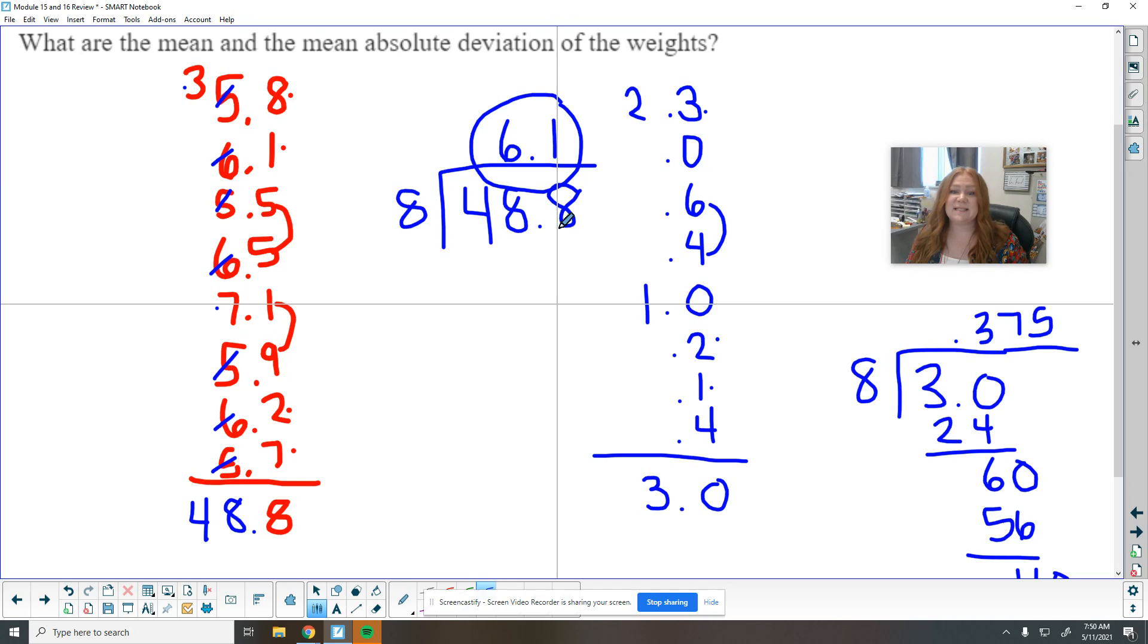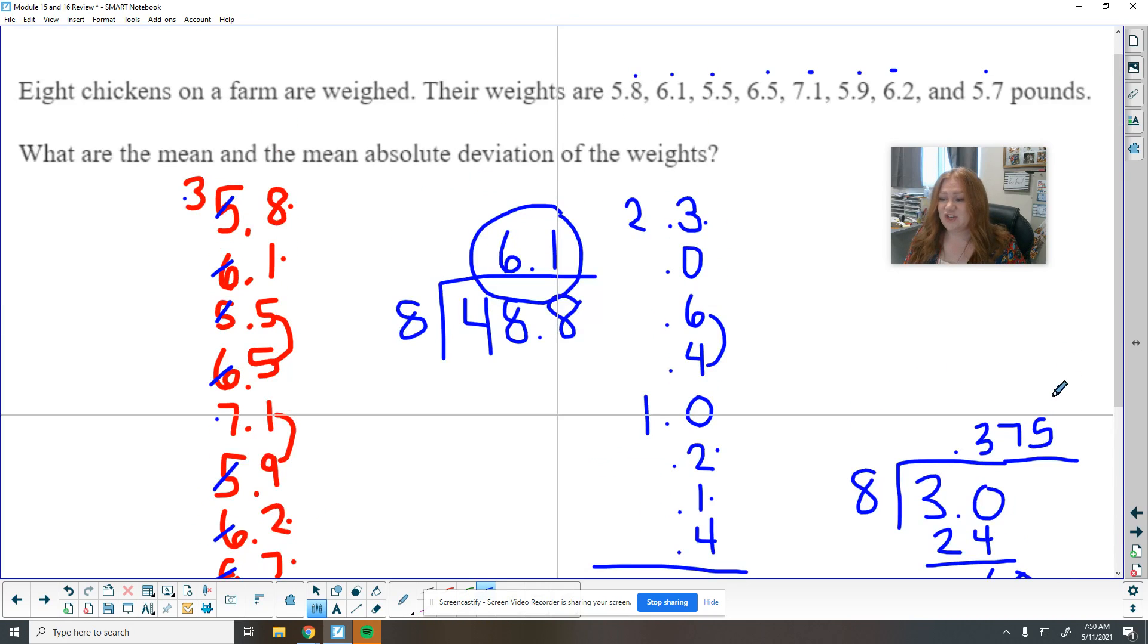So our average was 6.1. So most of the eggs weighed 6.1, not most of them. The average of the eggs weighed 6.1 pounds. If we redistributed them and made them all the same, they'd be 6.1. The deviation then is 0.375. So that's like 37 cents. That's really not a lot of money and it's not a lot of deviation. That's a really small amount that these eggs are deviating. So they're all pretty consistent.